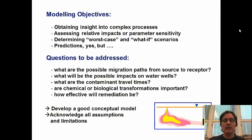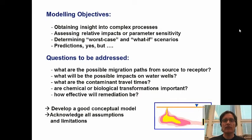Some questions that can be addressed from models: what are the possible migration paths from source to receptor? What will be the possible impacts on water wells? What are the contaminant travel times? Are chemical or biological transformations important? And how effective will remediation be? All these questions can be addressed with modeling in a relatively less expensive way than going back to the field for further tests. The final key ideas are the importance of developing a good conceptual model for both flow and transport, and acknowledging all assumptions and limitations — modeling is always a simplification of the real world.